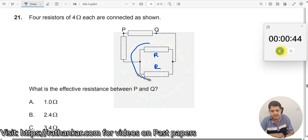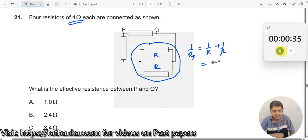So, what is the effective resistance of these two? This will be 1 by Rp is equal to 1 by R plus 1 by R. I will substitute the value of R equal to 4 ohm later on. First, let us do this one. So, this should be 2 by R, which means Rp will be equal to R by 2.